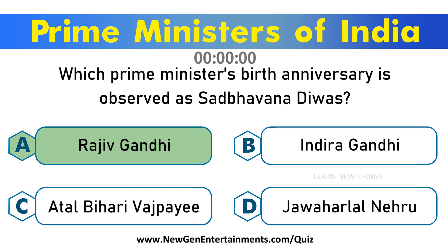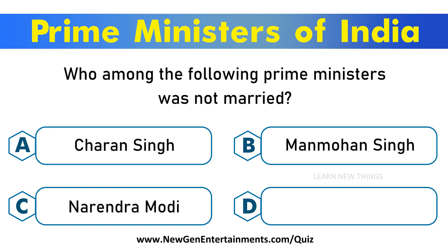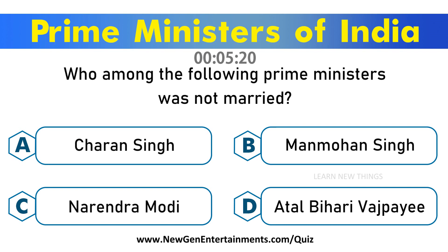Who among the following Prime Ministers was not married? Options are A. Charan Singh, B. Manmohan Singh, C. Narendra Modi, D. Atal Bihari Vajpayee. Answer is Option D. Atal Bihari Vajpayee.